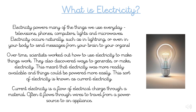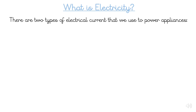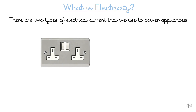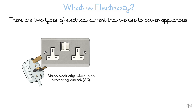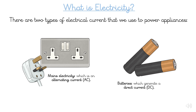Current electricity is a flow of electrical charge through a material, and it often flows through wires to travel from a power source to an appliance. There are two types of electrical current used to power appliances. Firstly, there is mains electricity, which is an alternating current. We also use batteries, which generate a direct current.